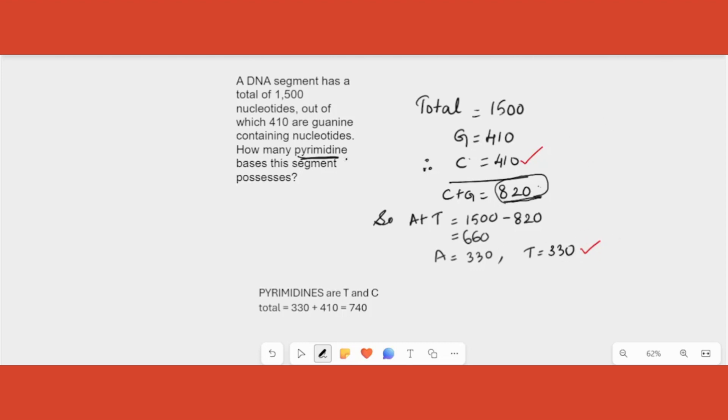But see, that is not the question asked. The question asked is how many pyrimidines are there? Pyrimidines are T and C. So purines are A and G and pyrimidines are T and C. So that is what we are asking how much are there? So what we have to do? Total number of pyrimidines are thymine plus cytosine. Thymine is 340. Cytosine is 410. So total is 750. So this is how you solve such questions. If they are not giving percentage, instead total number is given.